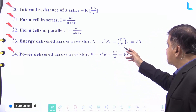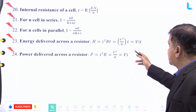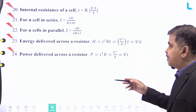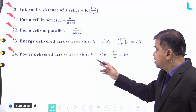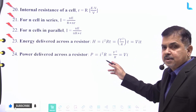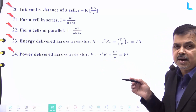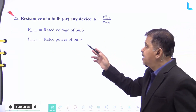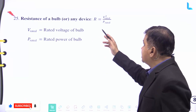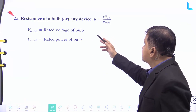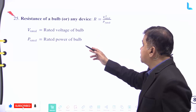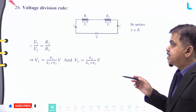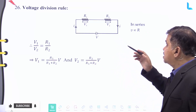The energy delivered across a resistor H equals I²RT, which is also equal to V²T/R or V × I × T. The power delivered P equals I²R, or V²/R, or V × I. The resistance of a bulb or any device is given by R equal to the rated voltage squared divided by the rated power.